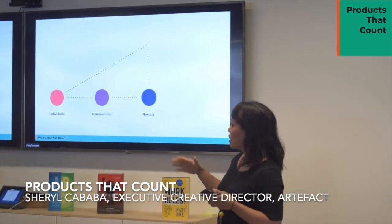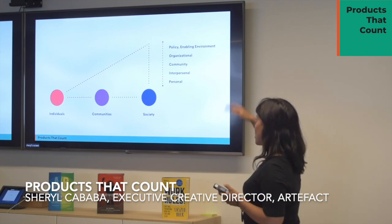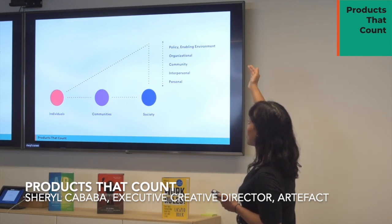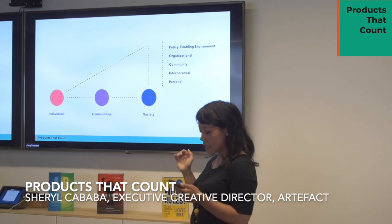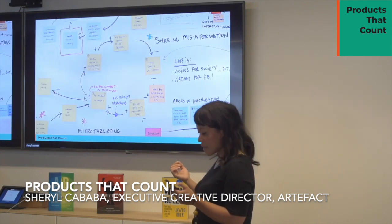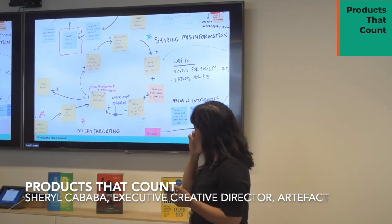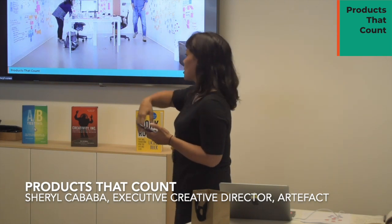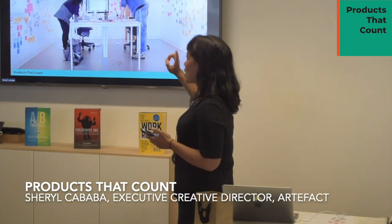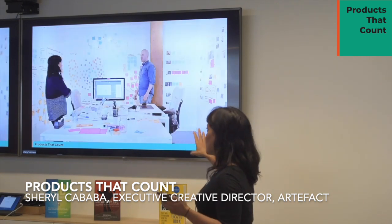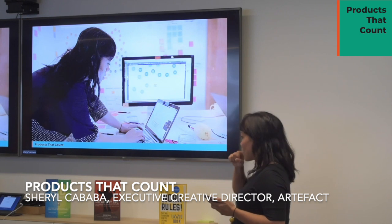Donella Meadows wrote the foundational book on systems thinking in the 70s — covering stock and flow, feedback loops, and how to disrupt them — but I found it too technical for what we were doing, so we simplified the approach. To constrain our scope, we focused on the impact of social media on individuals, communities, and society using five layers taken from the UNICEF social-ecological model: personal effects, interpersonal effects, community, organizational, and policy/enabling environments.